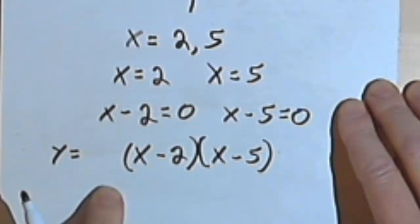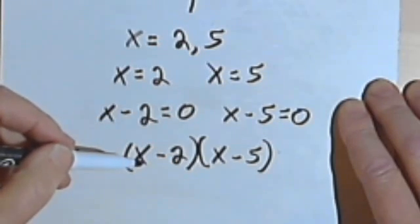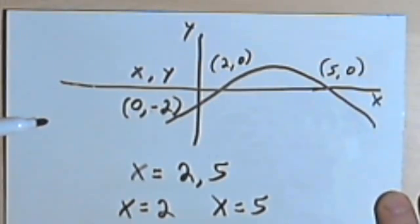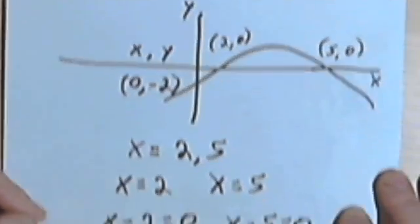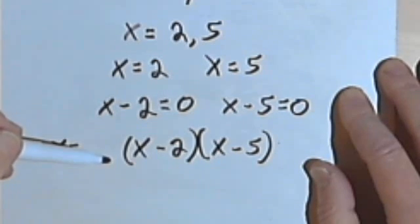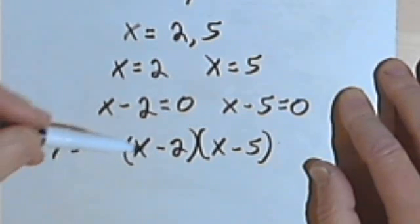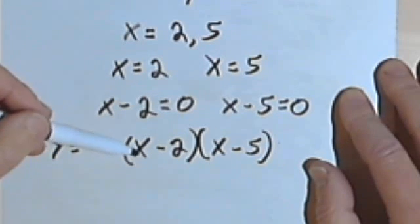When I multiply this out, I'm going to get an x-squared. But it's a downward opening parabola. So if it's a downward opening parabola, I want the coefficient of the x-squared to be negative. So it seems like I would have to multiply the right side by something to make the x-squared negative.